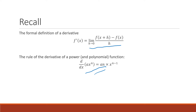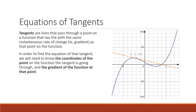First of all we need some good definitions. A tangent is a line that passes through a point on a function that has the same instantaneous rate of change — that is, the same gradient as that point on the function.